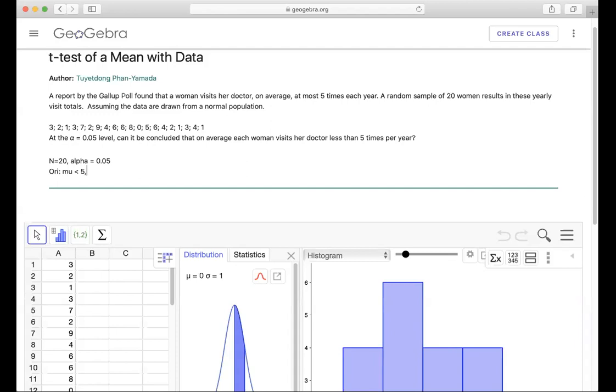The alternative claim would be mu greater than or equal to five.